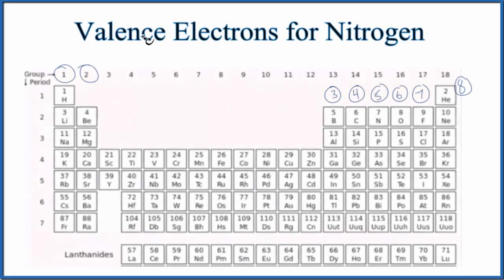In this video, we'll figure out the number of valence electrons for nitrogen, N. So there are two ways we can figure out the number of electrons in the valence shell of nitrogen.